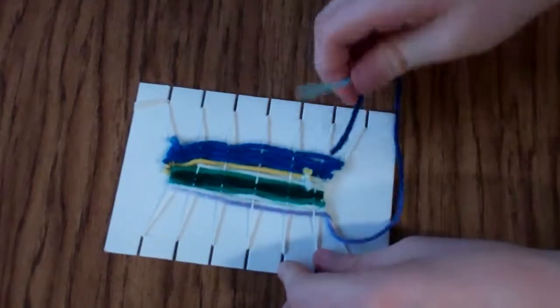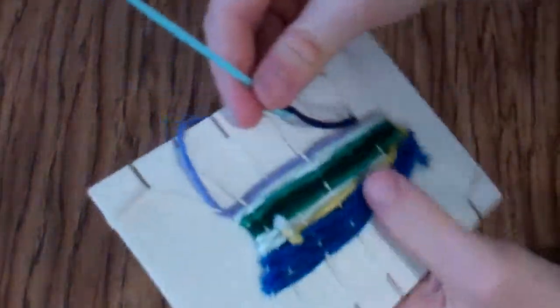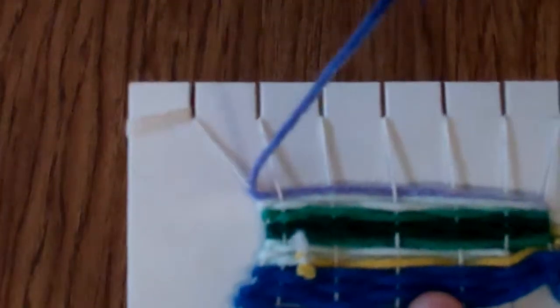This is how to finish a weaving when you're done and to take it off the loom. The first thing you need to do is make a knot. I call it an ending knot.